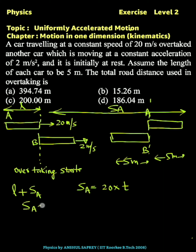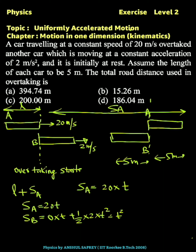Sa equals 20t. For car B, we use s equals ut plus half a t squared, giving 0 times t plus half times 2 times t squared, which equals t squared. Now using the relative concept: displacement of A minus displacement of B equals L plus L, which equals 10 meters.